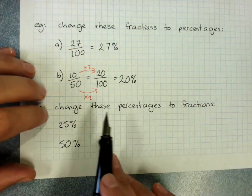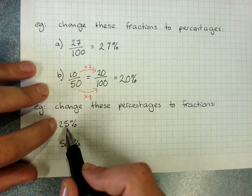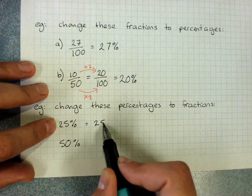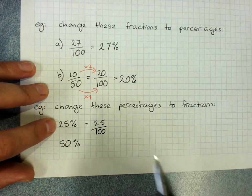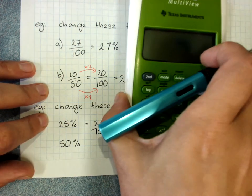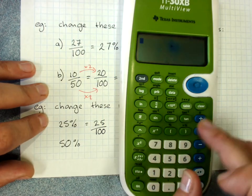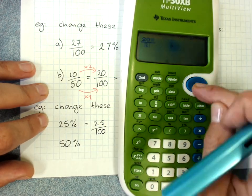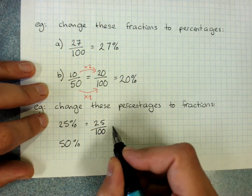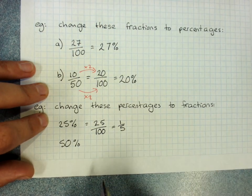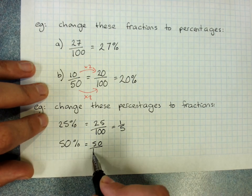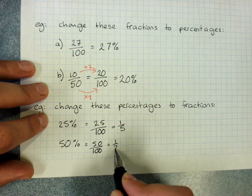So if I needed to change a percentage to a fraction: twenty-five percent means twenty-five out of a hundred. And then I can use my fraction simplifier on the calculator. And we know that fifty percent is fifty out of a hundred, which is a half.